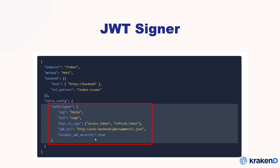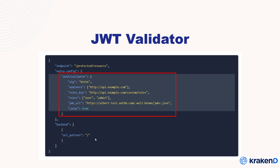The JWT validator gives us the opportunity to validate every authenticated request. For that purpose it needs the algorithm, audience, and role keys. Role keys are used when there are multiple roles required inside your endpoints — for example, normal user access and admin approval — that's why you need to pass a role key URL.